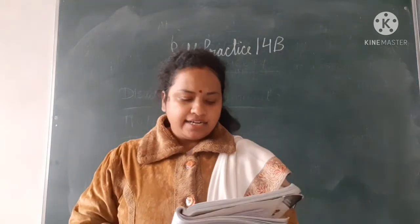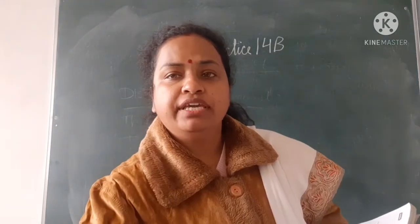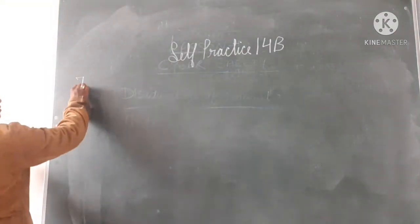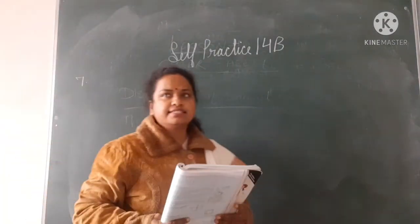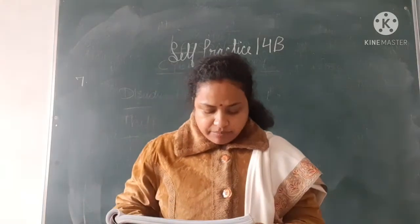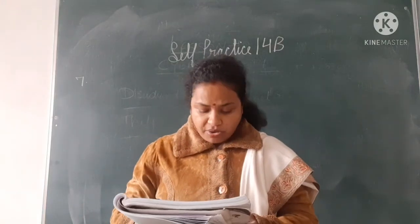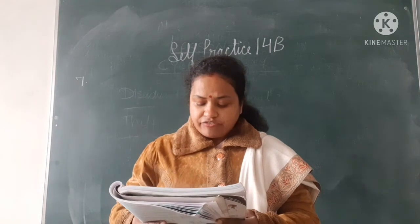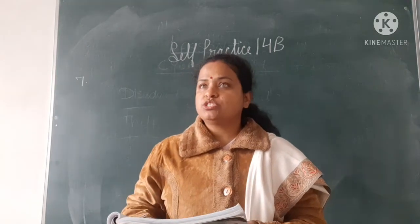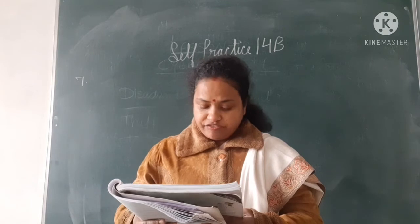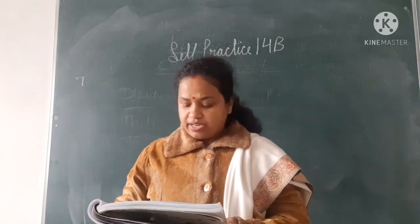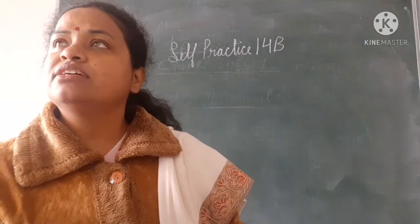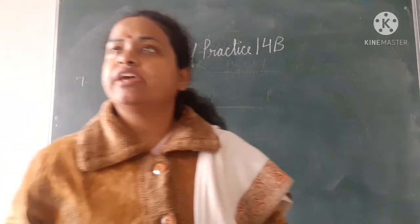Okay students, now let us start self-practice 14B, question number 7. So what is given in question number 7? Mr. Saxena bought a plot of land 80 metre by 40 metre at ₹50,000 per metre square. How much did the plot cost him?